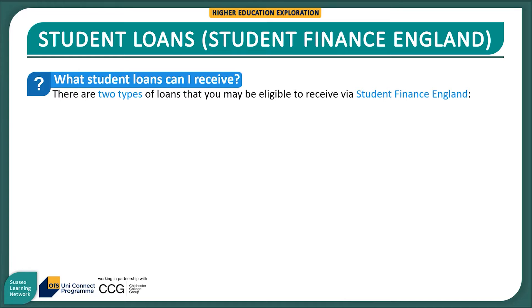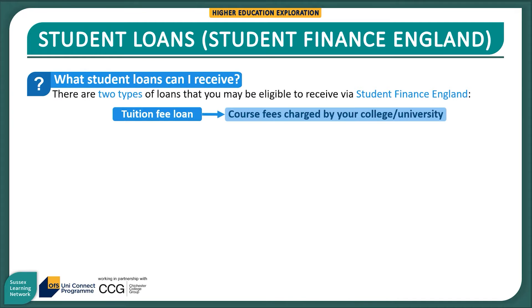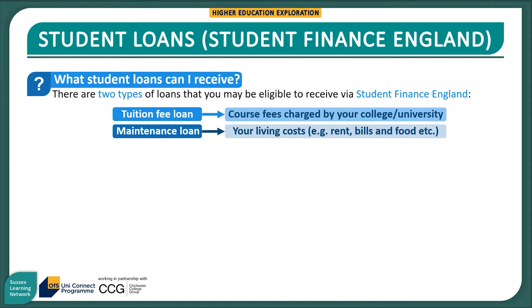First, let's talk about student loans. There are two types of loans that you may be eligible to receive via Student Finance England. The first is called a tuition fee loan, which pays for your course fees that your college or university charges you each year. The second is a maintenance loan, which helps cover your living costs — for example, rent, bills and food.